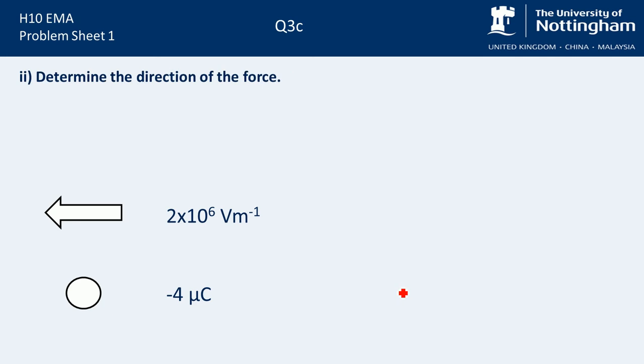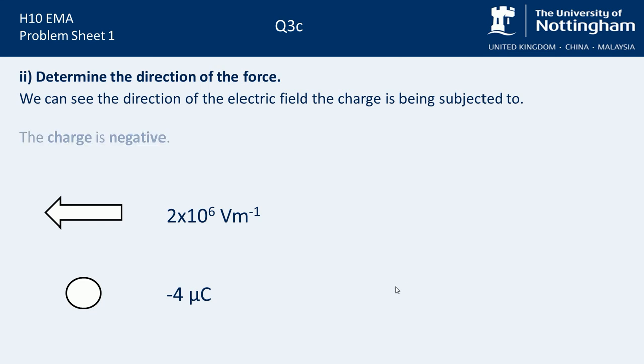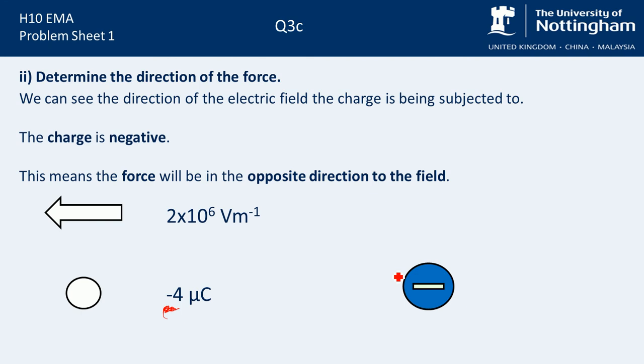Next up, we're going to find the direction of the force. We can see the direction of the electric field the charge is being subjected to, and it's moving to the left. We know that the charge is negative because it's got this minus sign here. That's important because in the lecture notes, we said that if the charge was negative, the force will be in the opposite direction to the external field.